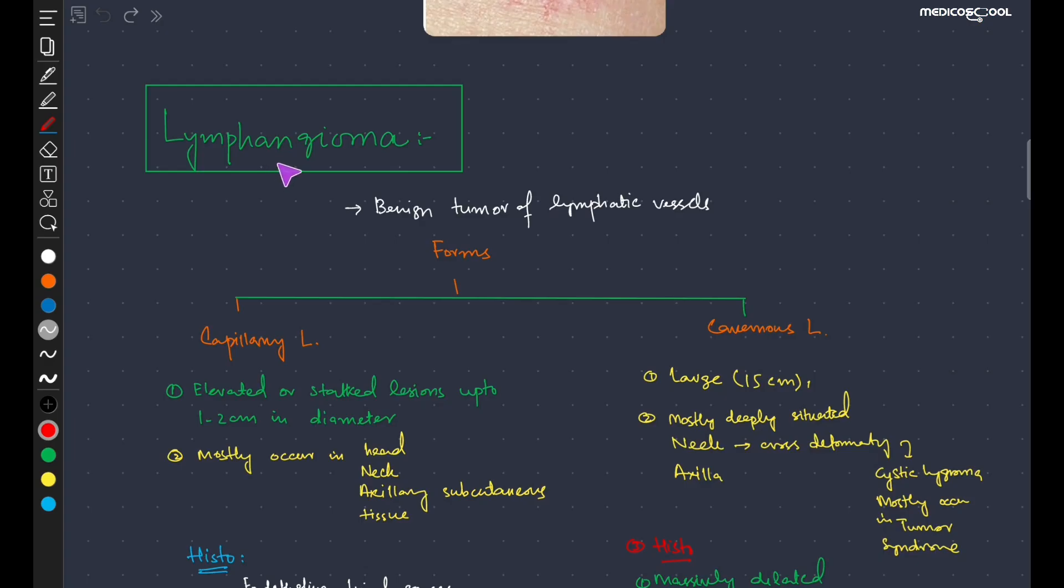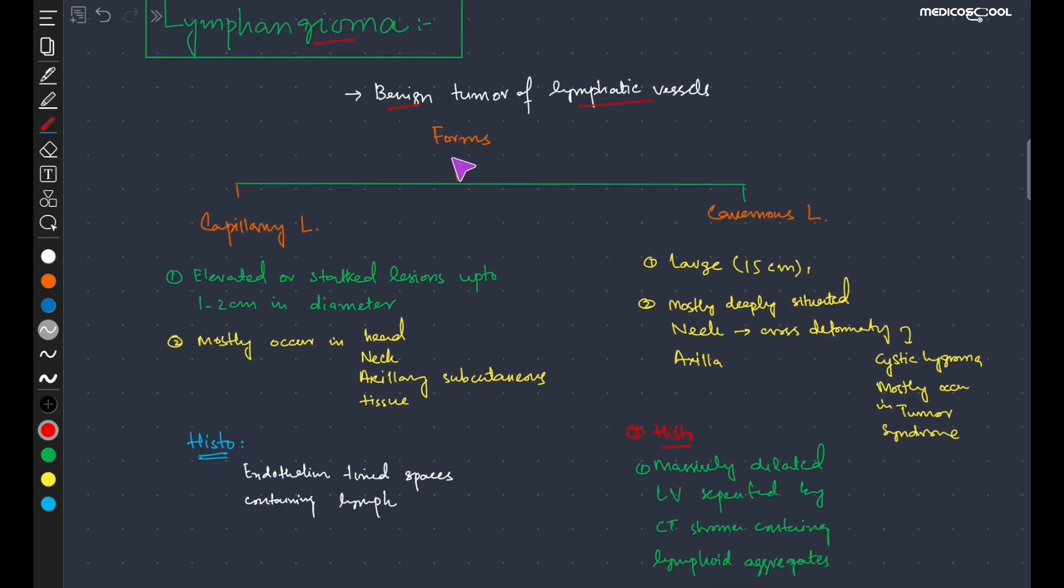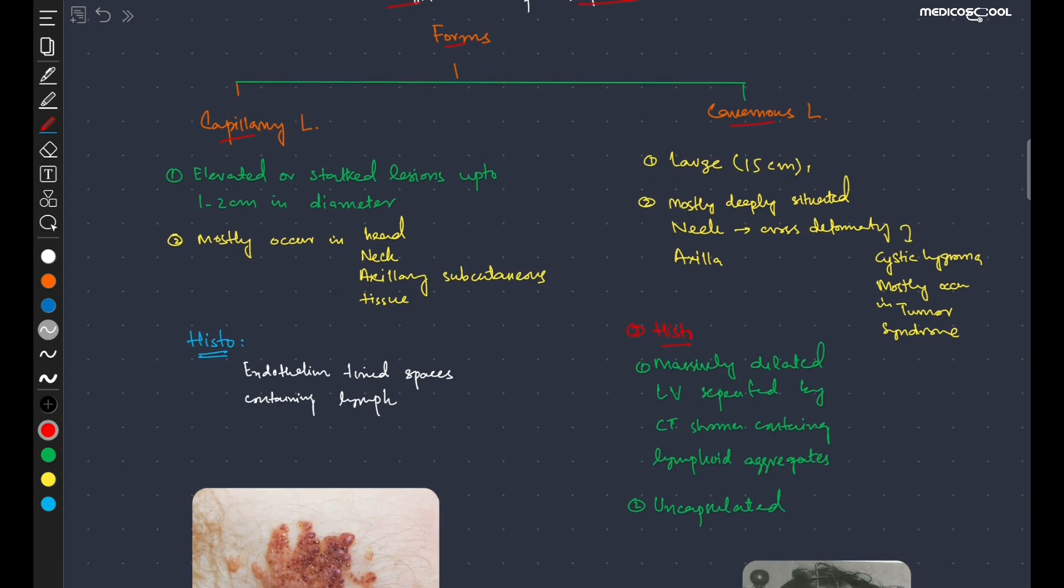Bismillahirrahmanirrahim, asalaamu alaikum. In today's lecture we are going to study about lymphangioma. Lymphangiomas are benign tumors of the lymphatic vessels. There are two types: the first one is capillary lymphangioma and the second one is cavernous lymphangioma.